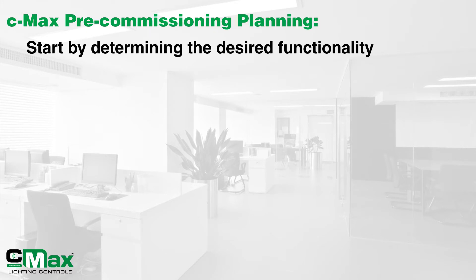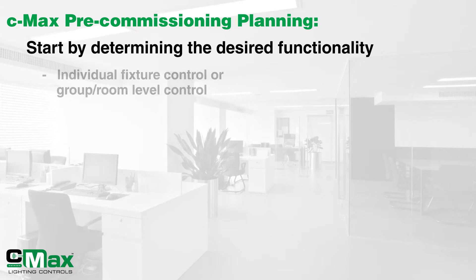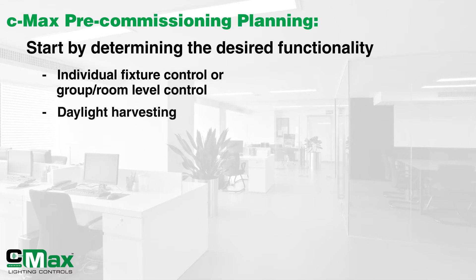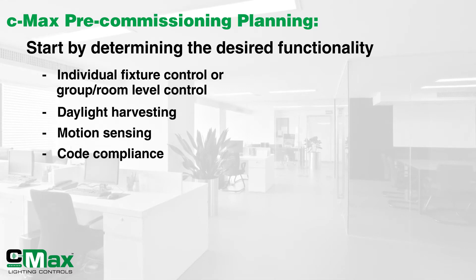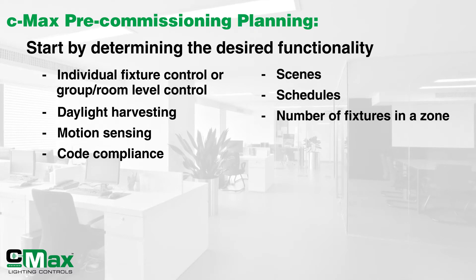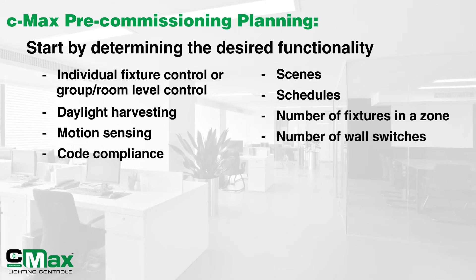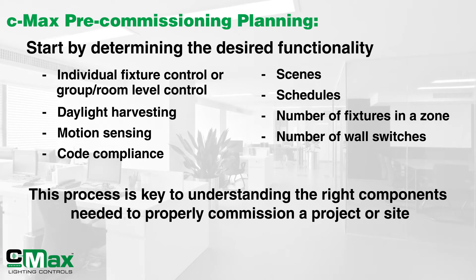First, it is always good to do some pre-commissioning planning to determine the desired functionality in the actual installation area. Considerations such as individual fixture control or group level control, daylight harvesting, motion sensing, and code compliance, scenes, schedules, number of fixtures in a zone, total number of wall switches, and more are key to understanding the right components needed to properly commission a project or site.